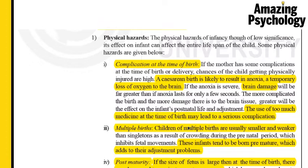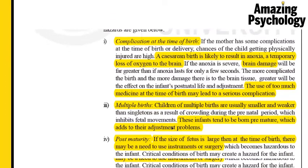The second physical hazard is multiple births. If the child is a single child, it will have enough room to move around in the mother's womb and enough nutrition. But when there are more than one child in the womb — such as twins, triplets, or more — the children born tend to be much smaller and weaker. They don't have enough room to move, so they also tend to be born premature, which increases the difficulty of adjusting to the new environment.